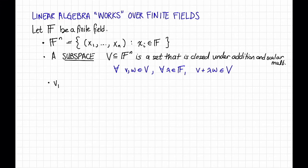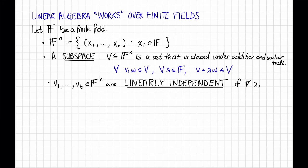We can define linearly independent vectors. So if we have vectors v1 dot dot dot up to vt in F to the n, we say that these vectors are linearly independent if for all scalars lambda 1 dot dot dot up to lambda t in F, so that they are not all 0, the sum over i of lambda i times vi is not equal to 0. That is, these vectors are linearly independent if they have no non-trivial linear combinations that are equal to 0.